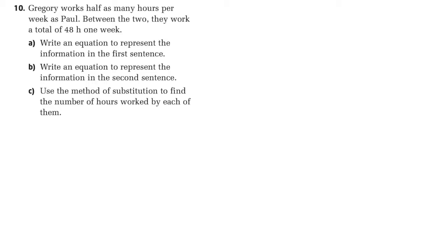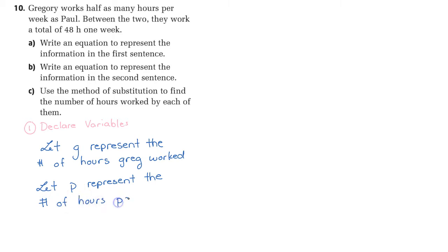This is an example of a question where we have to come up with a system of equations and then solve it. There's a five step process here. First step one is we're going to declare our variables. Let G represent the number of hours Greg worked. And we're going to let P represent the number of hours Paul worked.